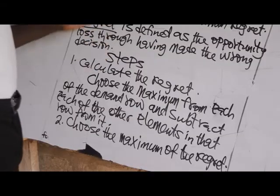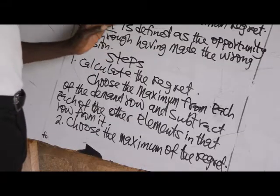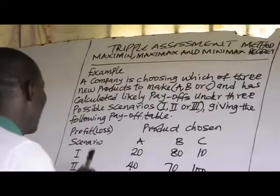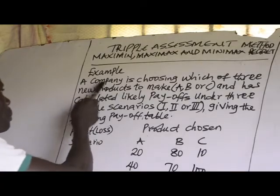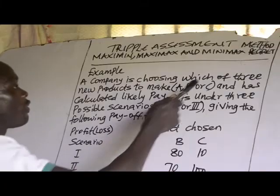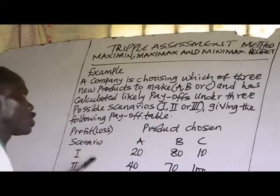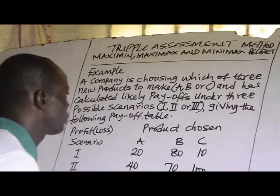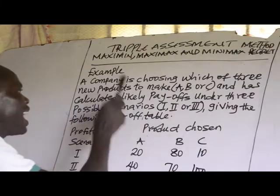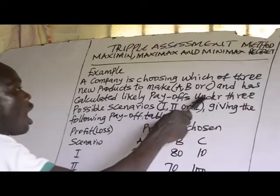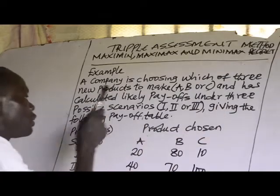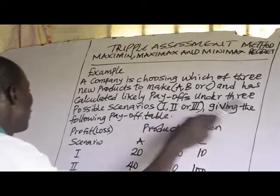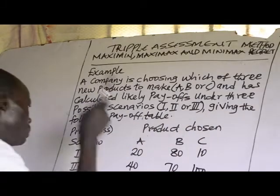Now let's take a worked example to explain the three rules. A company is choosing which of three new products to make — A, B, or C — and has calculated likely payoffs under three possible scenarios: 1, 2, or 3, given the following payoffs table.